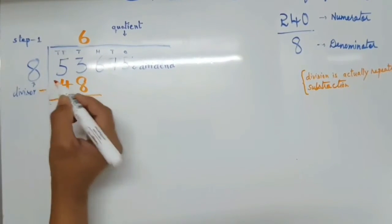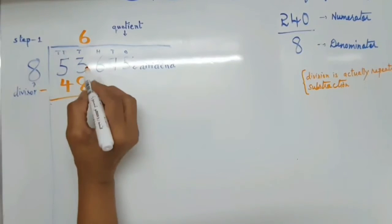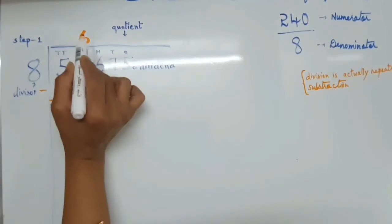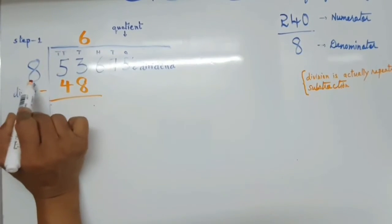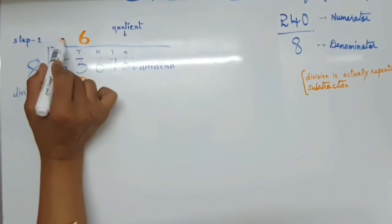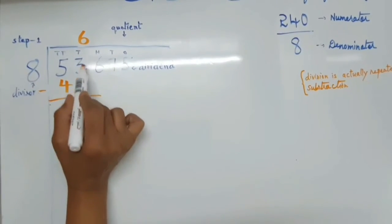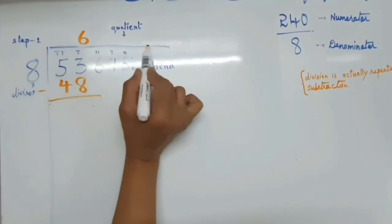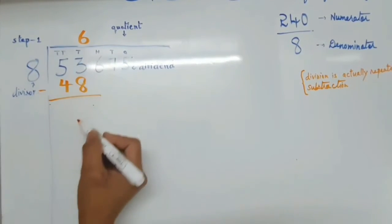Now we have to write 6 on top of the 3 because we had skipped our first digit. So we should not write 6 on top of the 5. We have to write on top of the 3 on the line, exactly on top of the 3. Then we have to subtract.